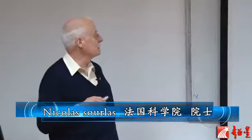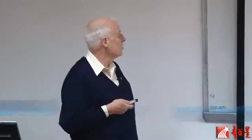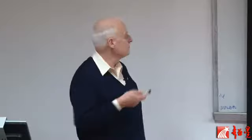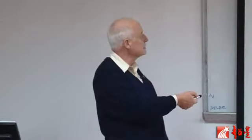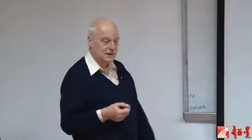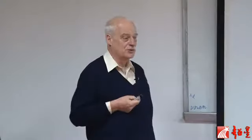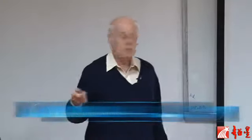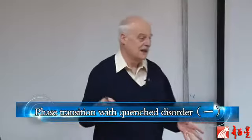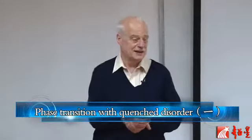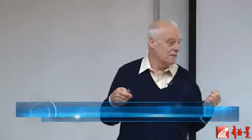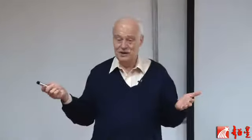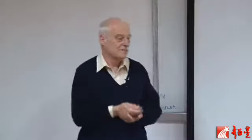I will give a few examples of systems with quenched disorder. Spin glass is such a system. This is the famous Edwards-Anderson Hamiltonian, which we use to model spin glasses. In spin glasses, the positions of the magnetic ions in the materials are random. Because the interaction depends on the distance, we get random interaction — random strength of interaction — because the positions are random.